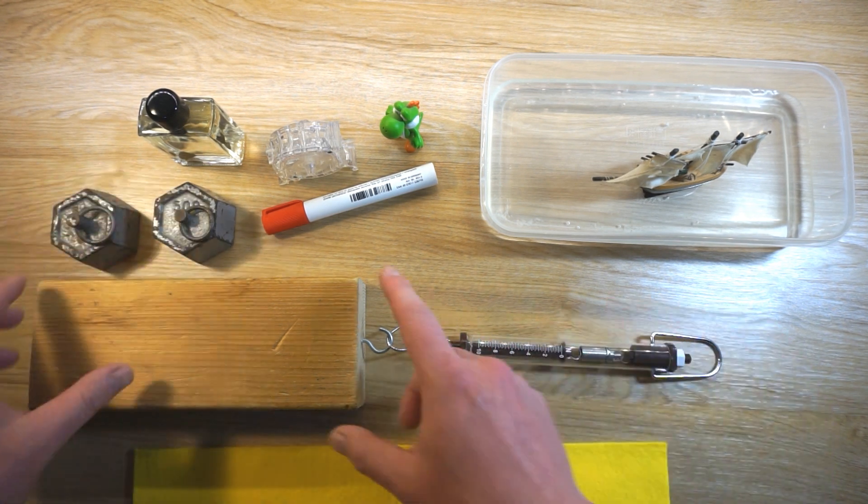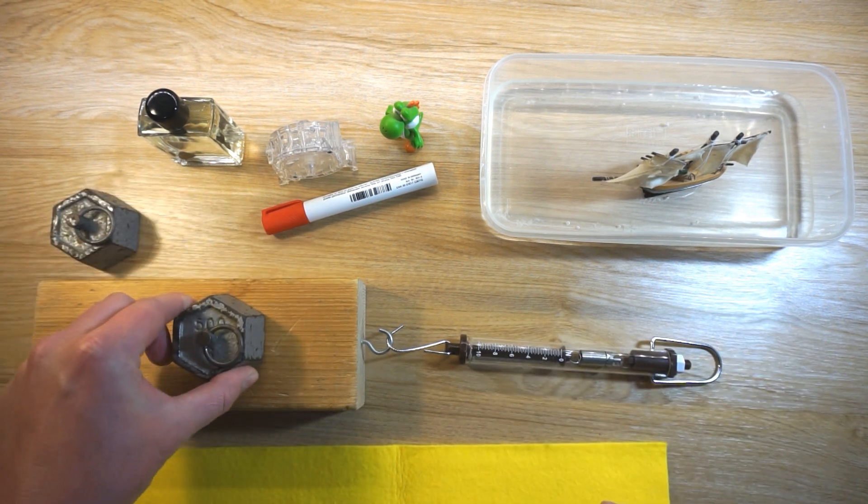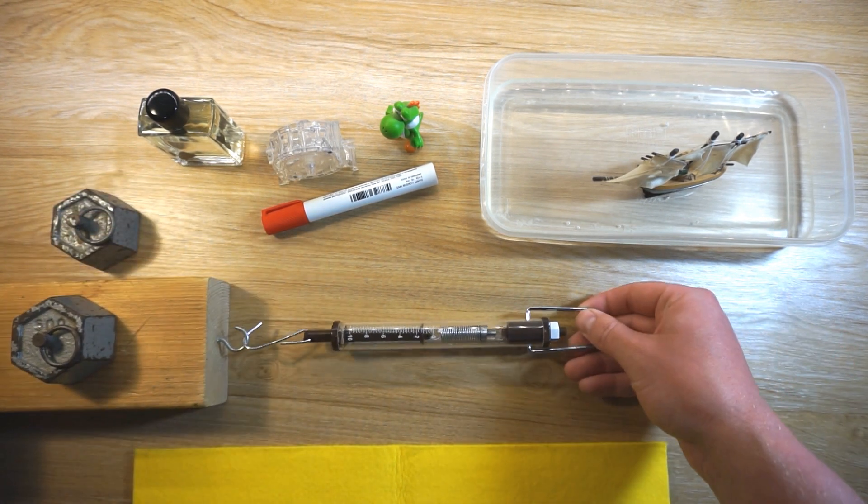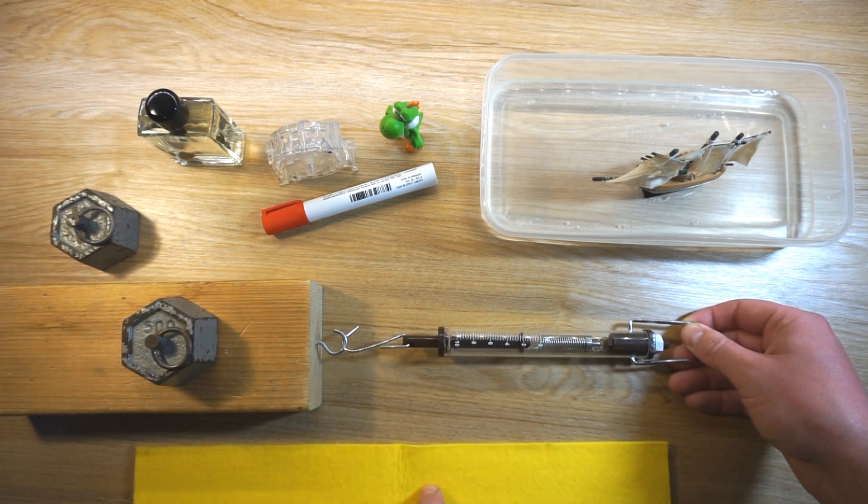To demonstrate this, we are using our block of wood again and our spring balance and a 500 gram weight, and we'll pull this block along a smooth surface, this desk, and also a rough surface, which is this felt.